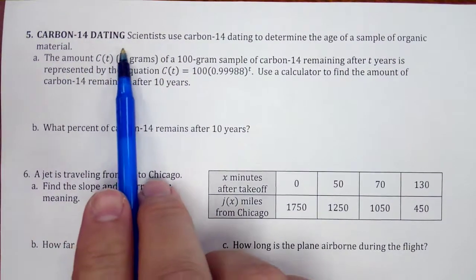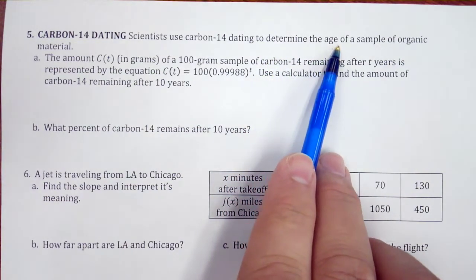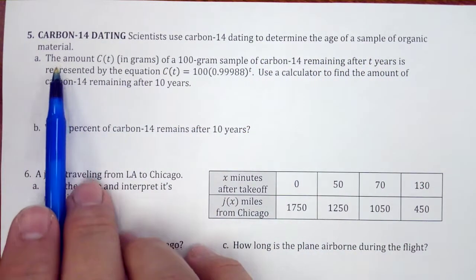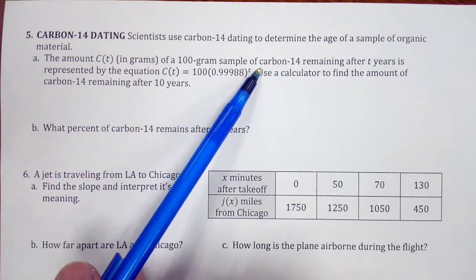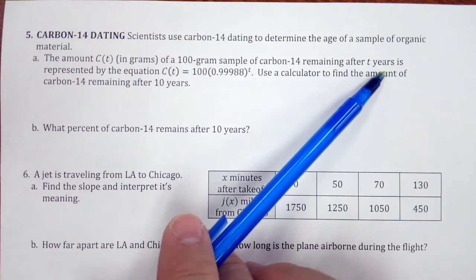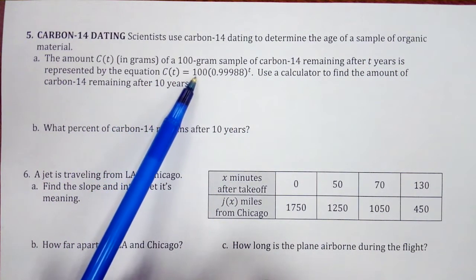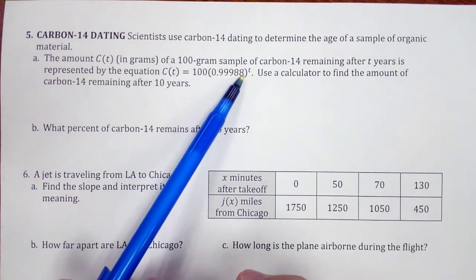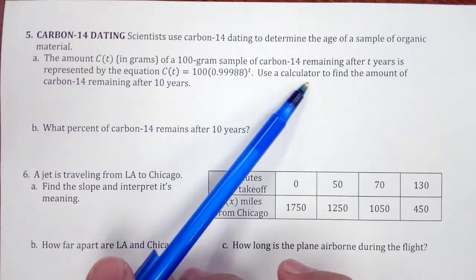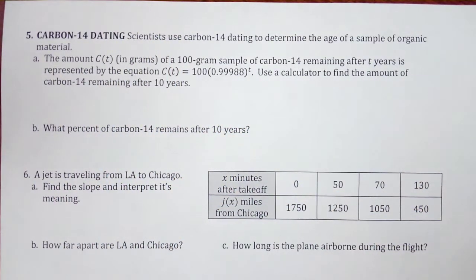Okay, so a scientist uses carbon-14 dating to determine the age of a sample of organic material. The amount of 100 gram sample of carbon-14 remaining after t years is represented by the equation C(t) equals 100 times 0.9998 raised to the t. Use a calculator to find the amount of carbon-14 remaining after 10 years.